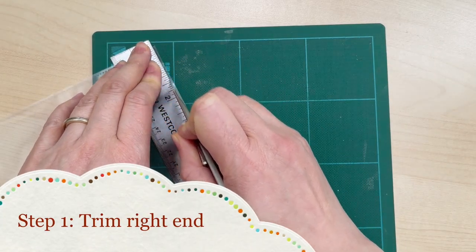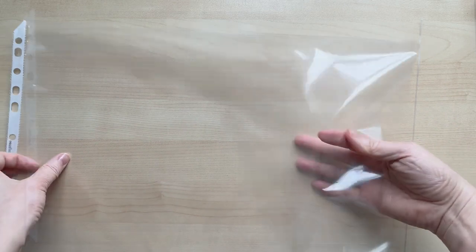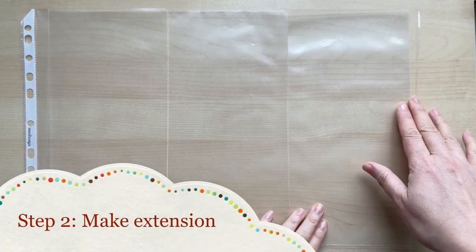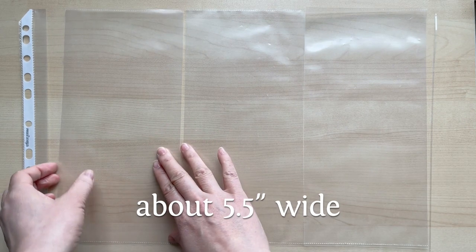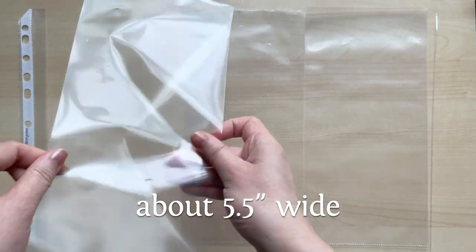Step one, trim the right end off to create a tube. Step two, if your paper is long like mine, you may prefer to extend the length. Cut another sheet into thirds. This will extend your sheet by about five and a half inches wide.